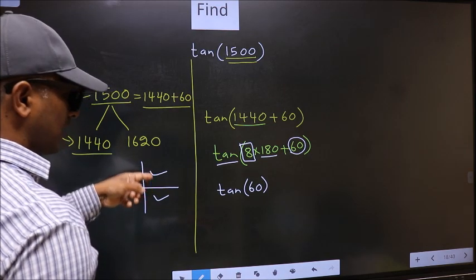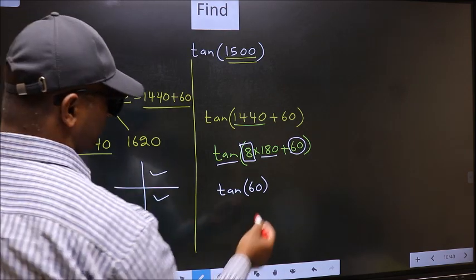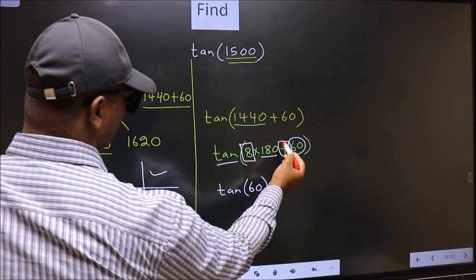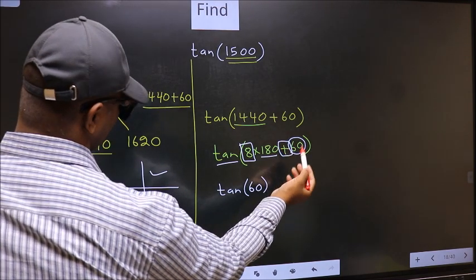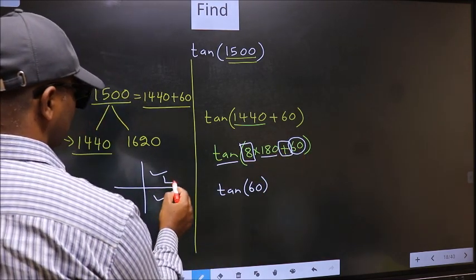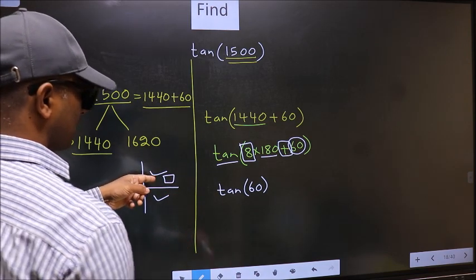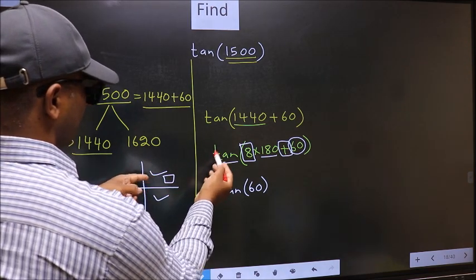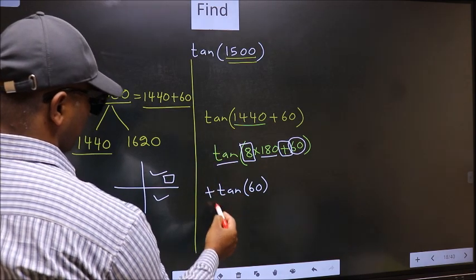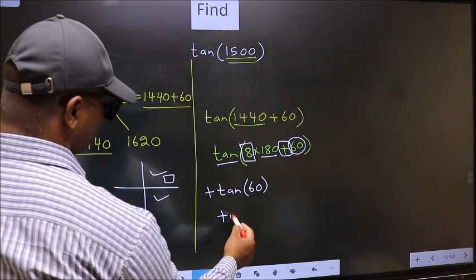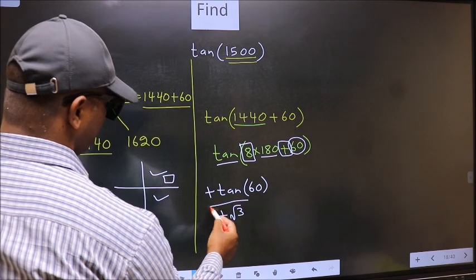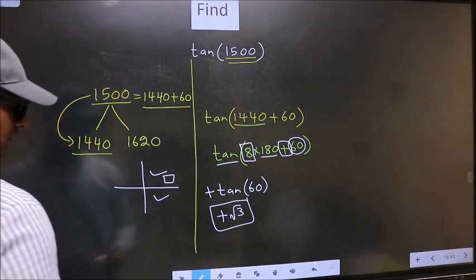So the angle lies in the first quadrant, and in the first quadrant tan is positive. So we should put plus. So plus tan 60 is root 3. This is our answer.